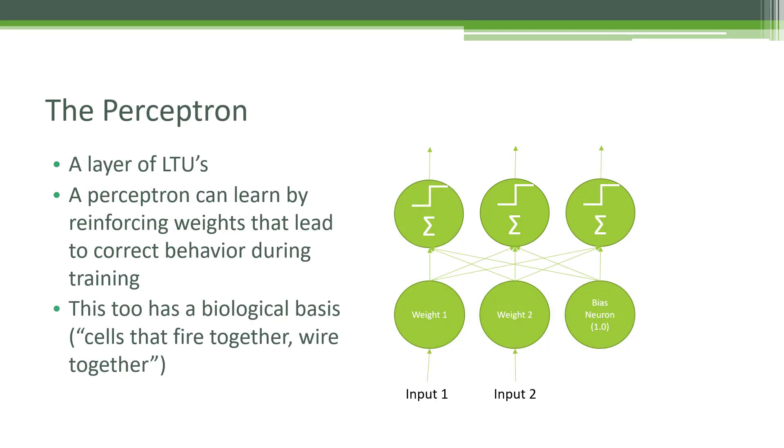Let's build upon that even further and create something called the perceptron. A perceptron is just a layer of multiple linear threshold units. Now we're starting to get into things that can actually learn. By reinforcing weights between these LTUs that produce the behavior we want, we can create a system that learns over time how to produce the desired output.